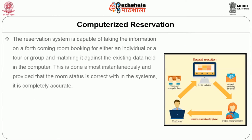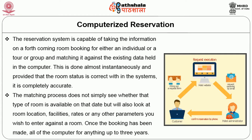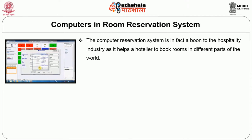Now let us see the role of computers in reservation. The reservation system is capable of taking information on a forthcoming room booking for either an individual or a group, and matching it against existing data almost instantaneously. Provided that the room status is correctly maintained within the system, it is completely accurate. The system does not simply check whether that type of room is available on that day, but also looks at room location, facilities, rates or any other parameters you wish to enter against a room. Once a booking has been made, the information is stored in all the computers for up to three years.